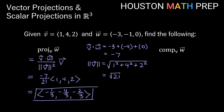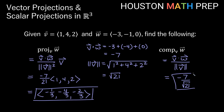The scalar projection of W onto V is the dot product divided by the magnitude of V: -7/√21. Rationalizing, that's -7√21/21, which reduces to -√21/3. Hopefully this helps you with your vector and scalar projections and keeping everything straight. Thanks for watching — we'll see you in the next video.